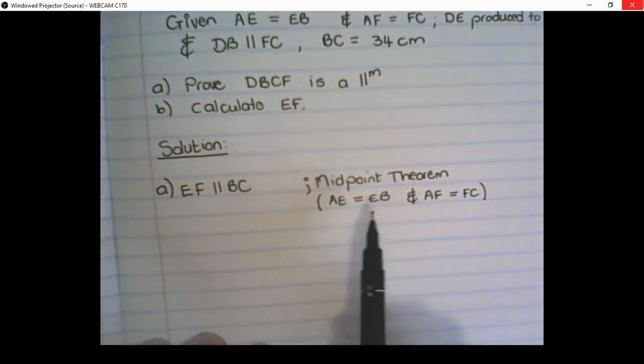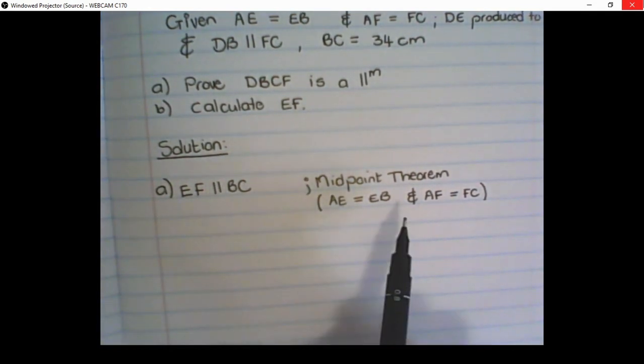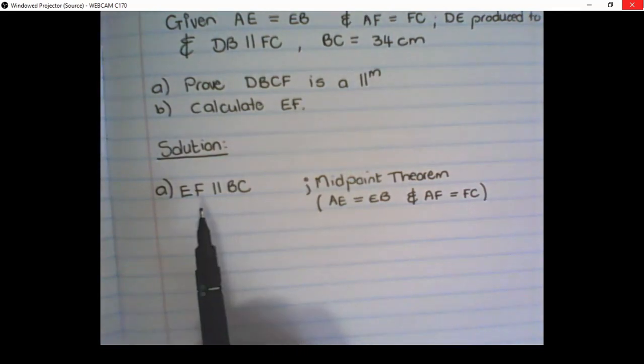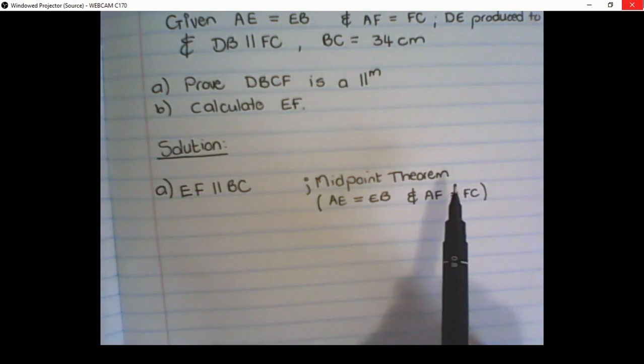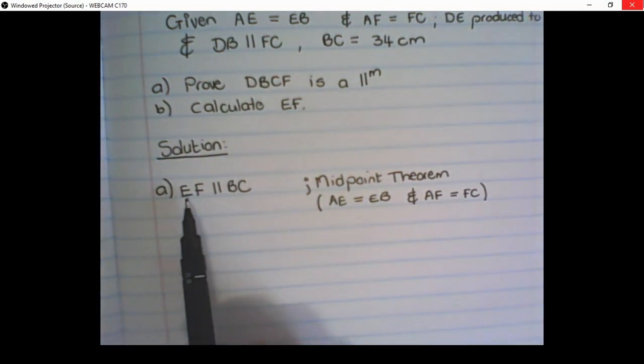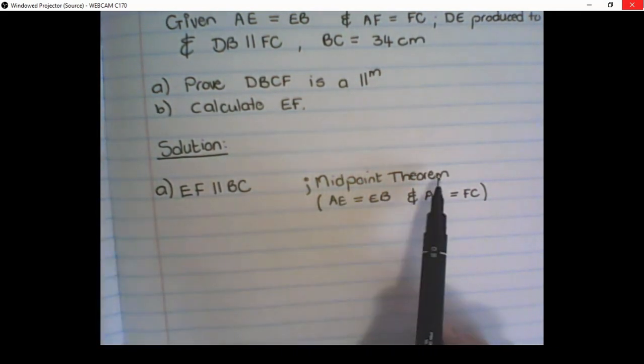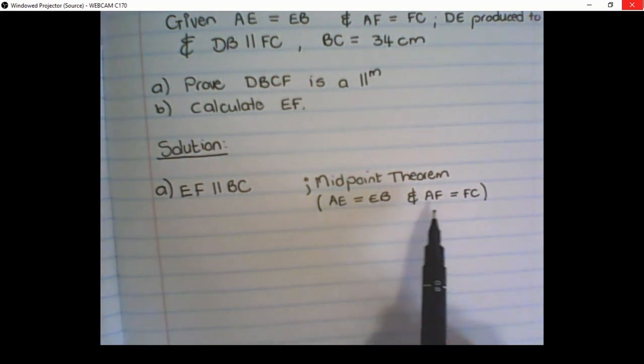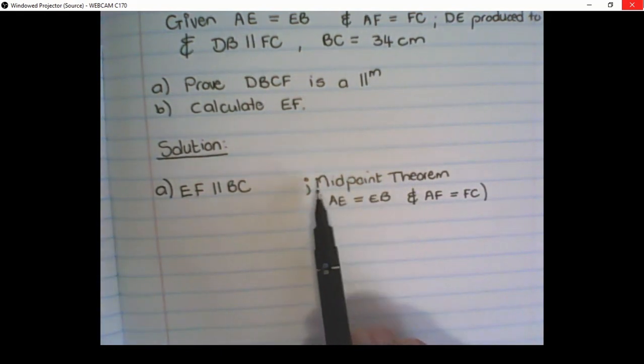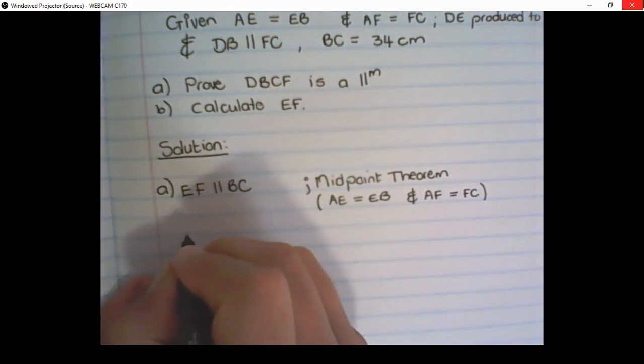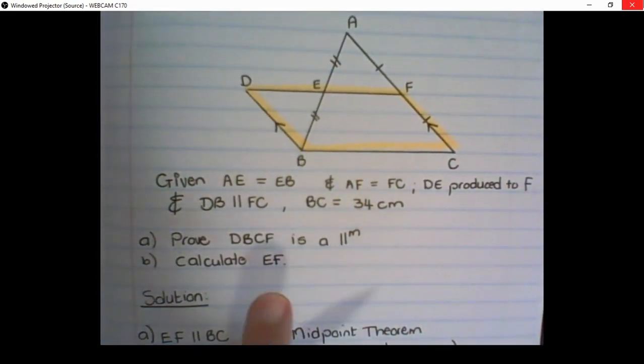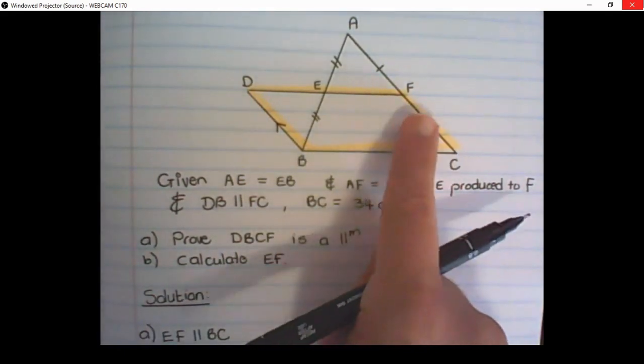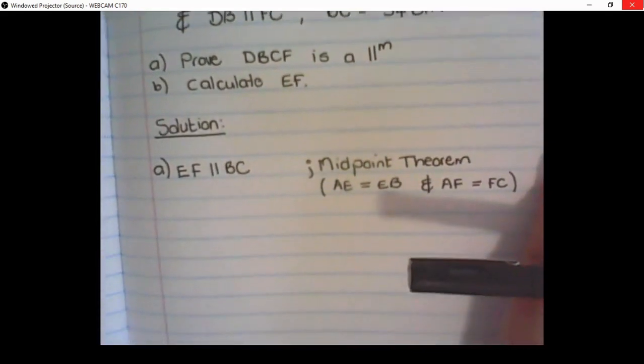You can either start this statement with AE equals to EB, and AF equals to FC, therefore EF is parallel to BC, or you can write it a bit simpler in the way I wrote it, and say EF is parallel to BC, midpoint theorem. And underneath the midpoint theorem, I write the reason why I can use the midpoint theorem. Then, the second part that we have is that DB is parallel to FC, and that was given.